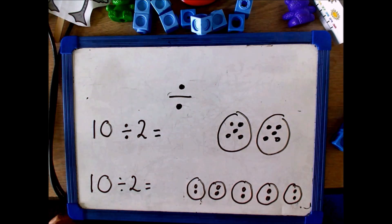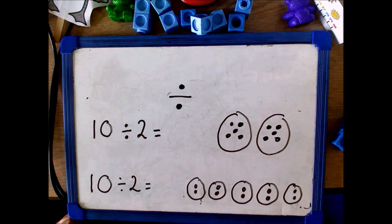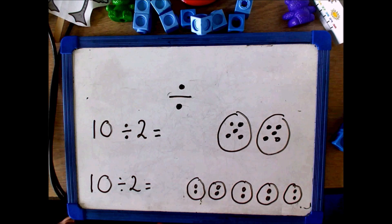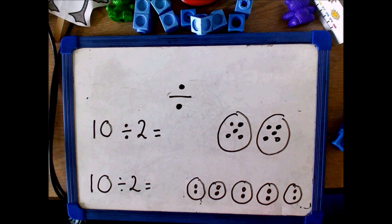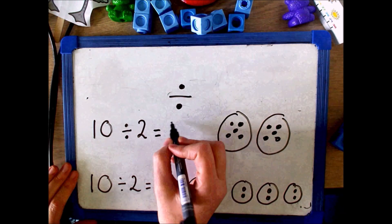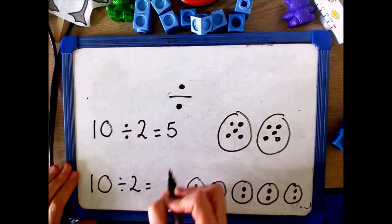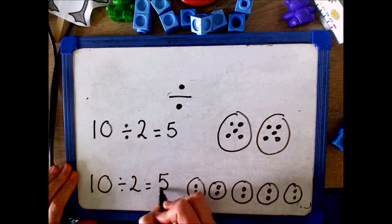One advantage of using groups is that children can use their times table knowledge to help them. So here we could count in 2s: 2, 4, 6, 8, 10. There are 5 groups of 2.